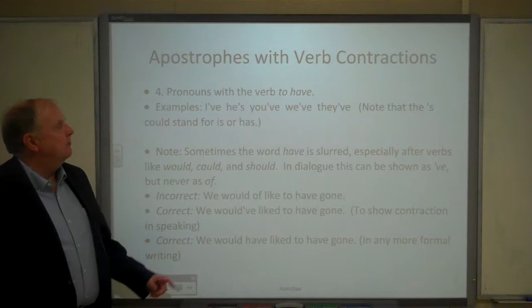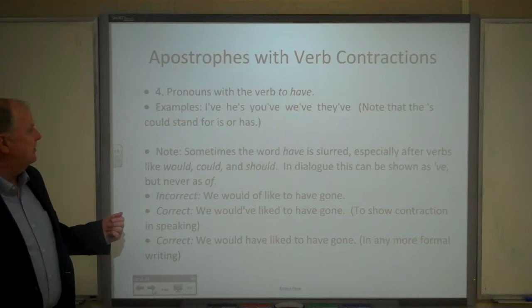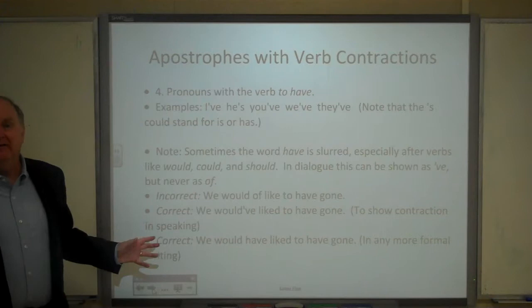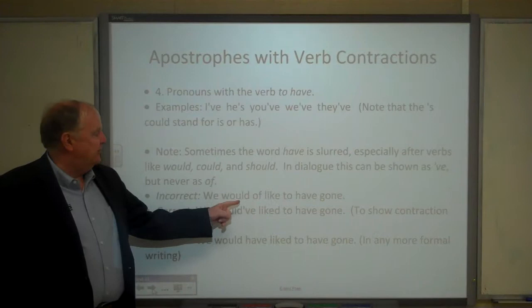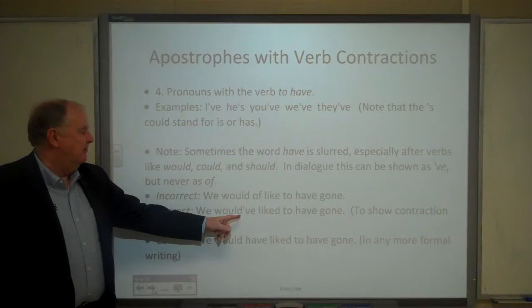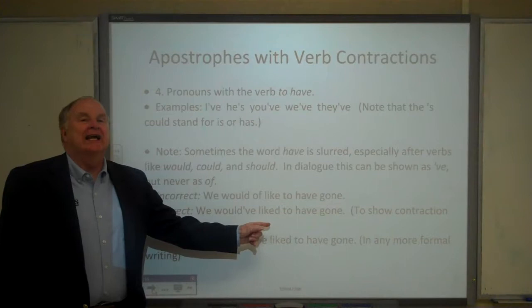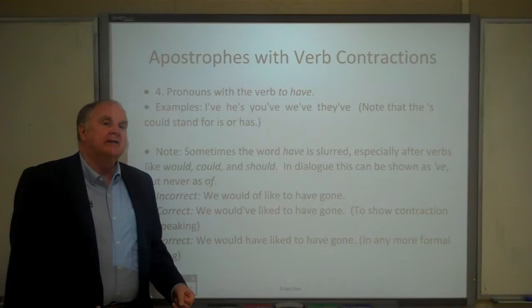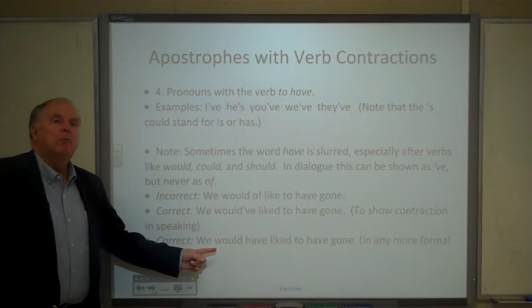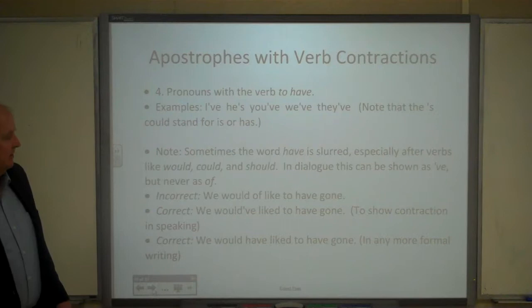Pronouns with the verb to have: I've, he's, you've, we've, they've. Sometimes the word have is slurred, especially after verbs like would, could, and should. In dialogue this is shown as apostrophe V-E. Don't use O-F, because that's a different word. So instead of 'we would of liked to have gone,' write 'we would've liked to have gone.' Also note that with like and suppose, those words are often followed by to, but most of the time it's really liked or supposed with a D — a spelling issue worth noting.